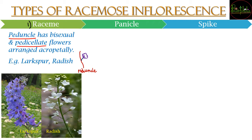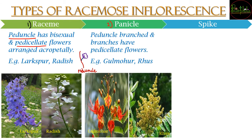The second type is the panicle. It has a branched peduncle and the branches bear pedicellate flowers. So there is one peduncle with branches, and on those branches are pedicellate flowers. Such is found in the case of gulmohar and rice.